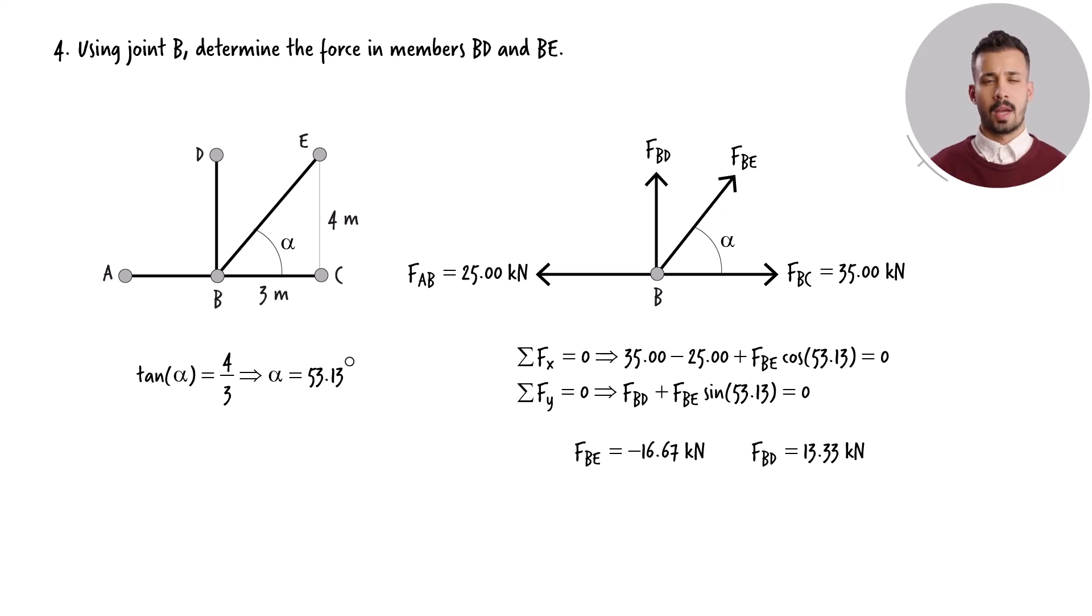So member BE carries a compressive force of approximately 17 kilonewtons, and BD carries a tensile force of 13 kilonewtons.